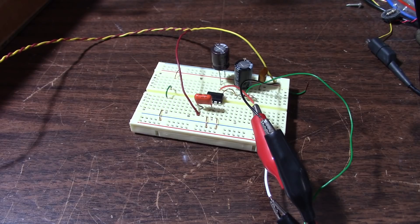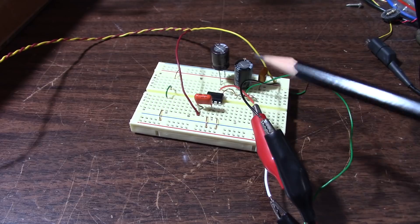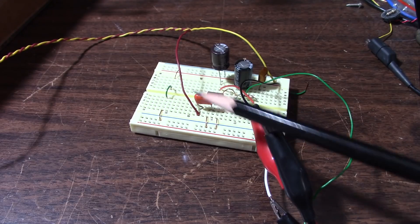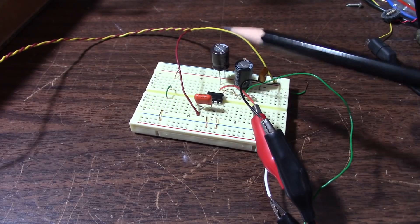But being an audio electronics type channel, I want to cover mainly an audio amplifier circuit. And that's what I set up here, just a simple LM386.